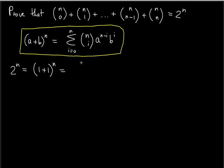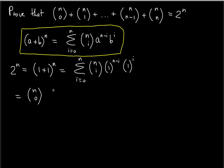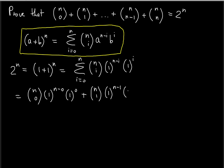So we can express this as the sum from i equals 0 to n of n choose i, with 1 raised to the n minus i times 1 raised to the i. Starting from i equal to 0, we have n choose 0 times 1 to the n minus 0 — which is just n — times 1 to the 0. The next term is n choose 1, times 1 to the n minus 1, times 1 to the first power.